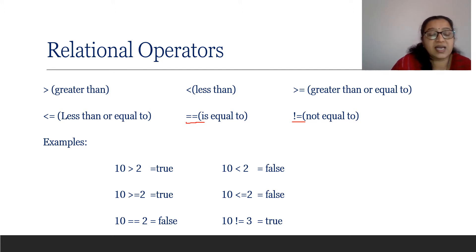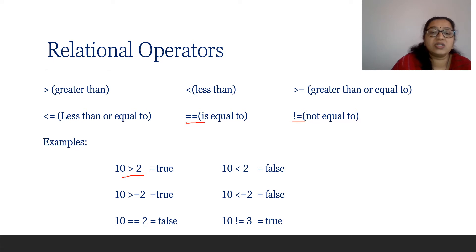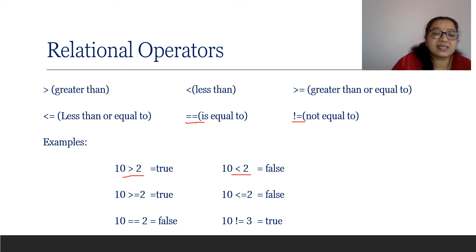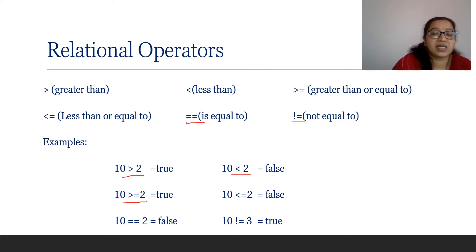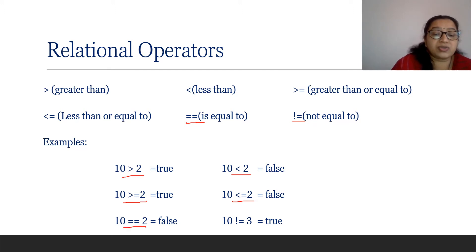Just see the examples. 10 greater than 2 — checking if 10 is greater than 2 — it is true. 10 less than 2 — checking if 10 is less than 2 — it is false. 10 greater than or equal to 2 — it is already greater than, so true. 10 less than or equal to 2 — 10 is not less than 2 — false. 10 equal to equal to 2 — 10 is not equal to 2 — false.